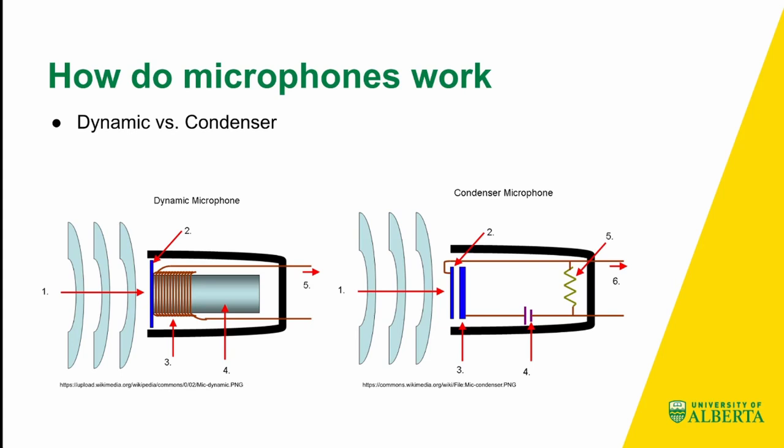Sound, very basically, is the compression of air due to particles being moved. For human speech, these particles are moved because of the movement of our anatomy, in particular our mouth. So generally, we can think of sound as waves going through the air. In the diagrams below, the blue waves that have an arrow through them and the number one beside them represent sound. The way that microphones generally work is they take in the airwaves and replicate those in a digital signal.